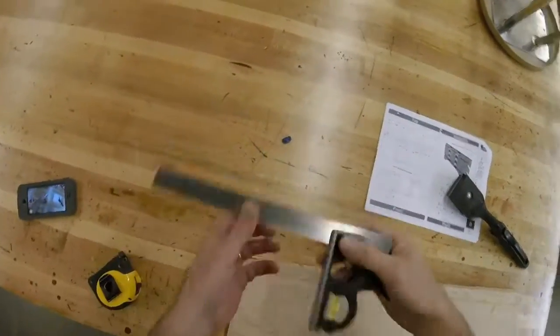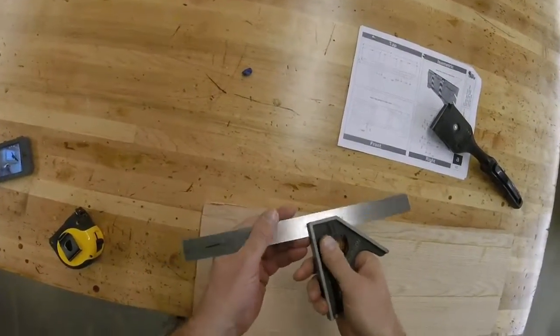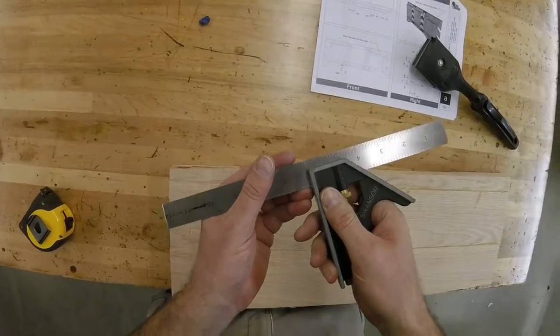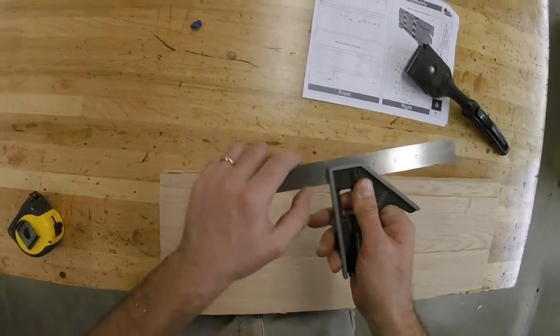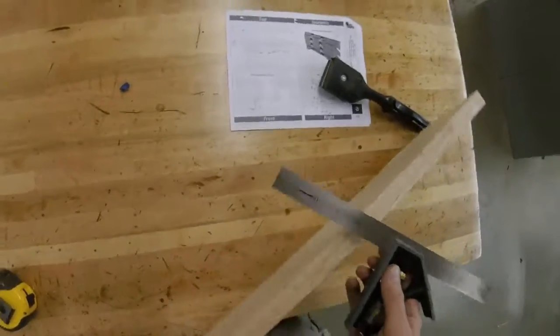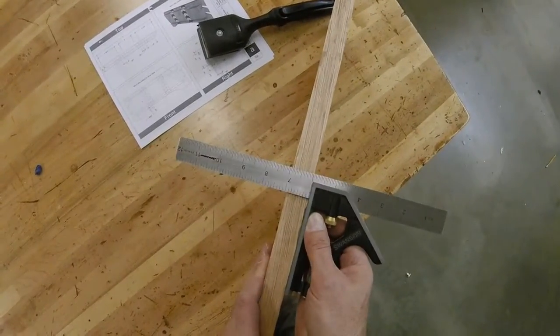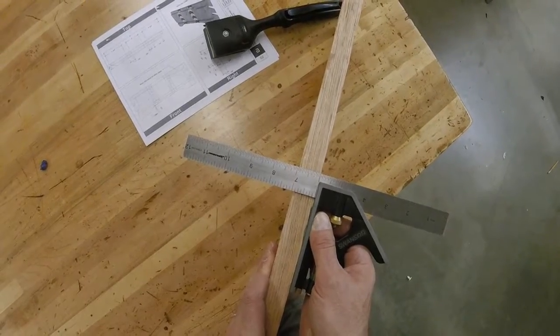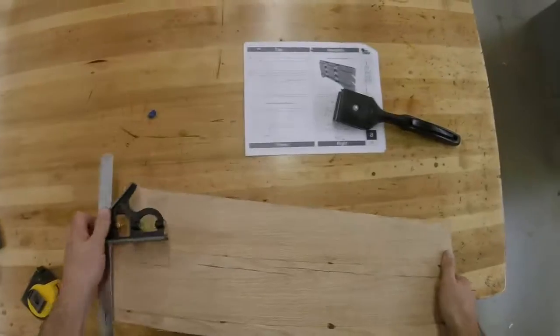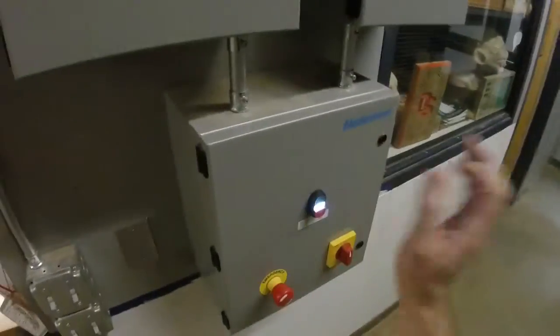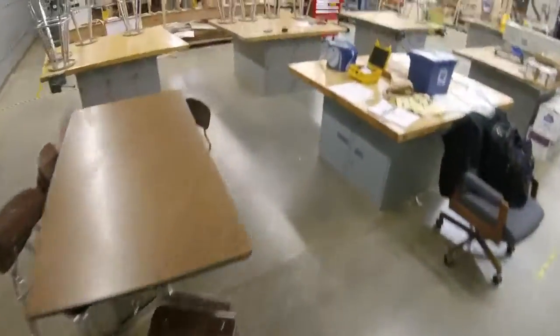When I go to the planer, I'm also going to take my combination square with me, and I'm going to set this so that the shoulder is right at an inch mark, and I'm going to use this to check my thickness every pass through the planer. So right now, we are just over seven-eighths of an inch. So I've got my measuring tool, I've got my board, I've got to turn Jeffrey on, and to the planer we go.